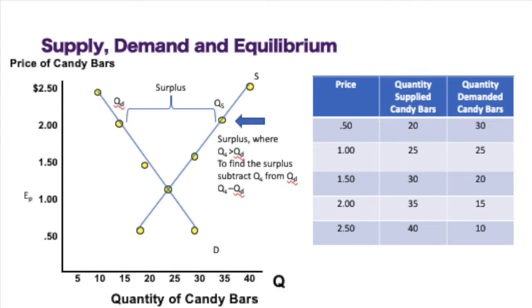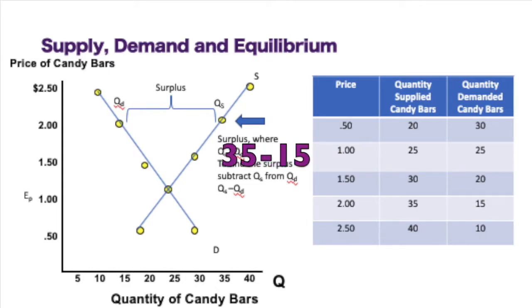There are times when there are more products in the market and there's not as much demand — this is where we would see a surplus. A surplus happens above the equilibrium point, when quantity supplied is greater than quantity demanded. At the price $2, the quantity demanded for candy bars is 15, but the quantity supplied is 35. You take quantity supplied minus quantity demanded, and that gives you 20 candy bars in surplus in this market.